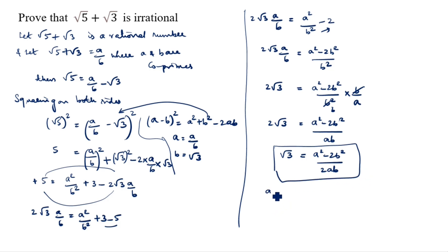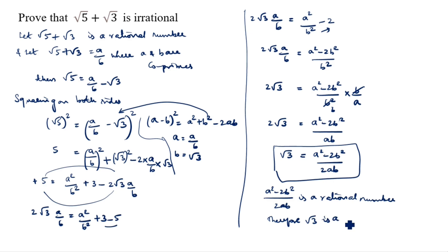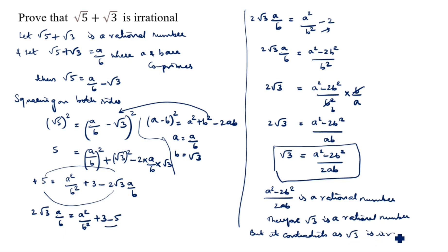Since a square minus 2b square by 2ab is a rational number, root 3 would have to be a rational number. But this is a contradiction, since root 3 is known to be irrational. Therefore, our assumption was wrong, and root 5 plus root 3 is irrational.